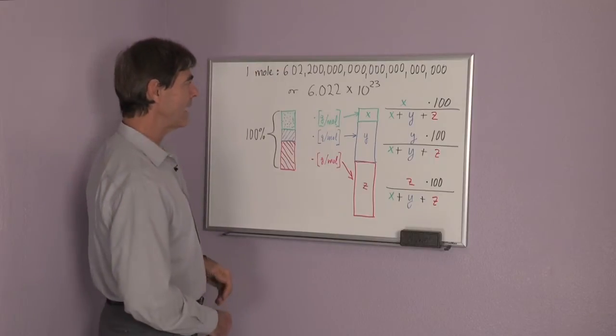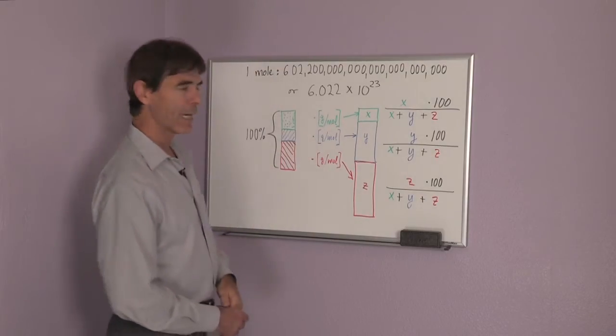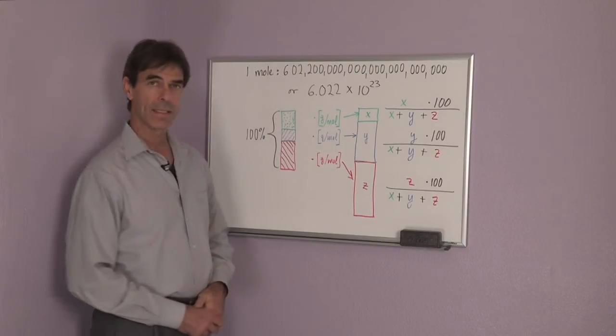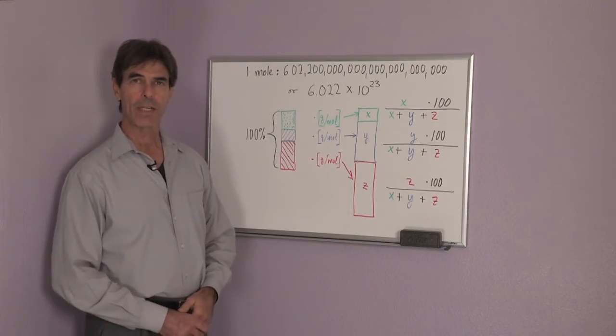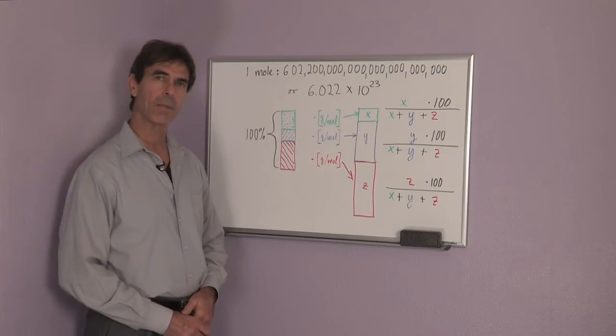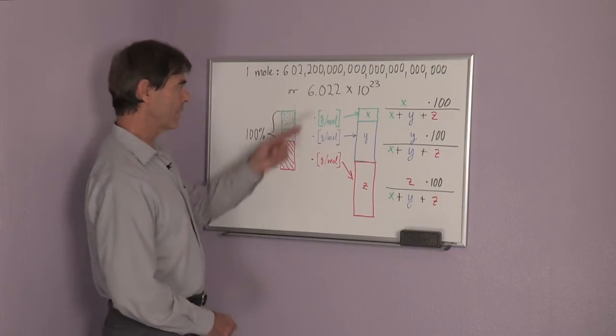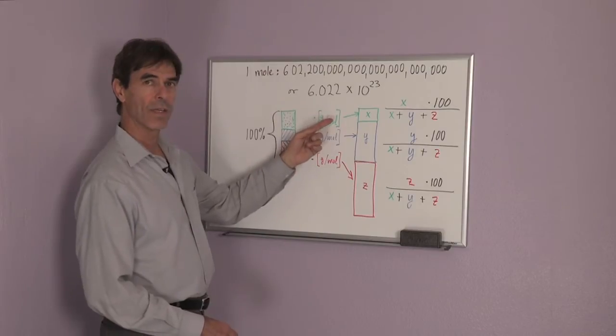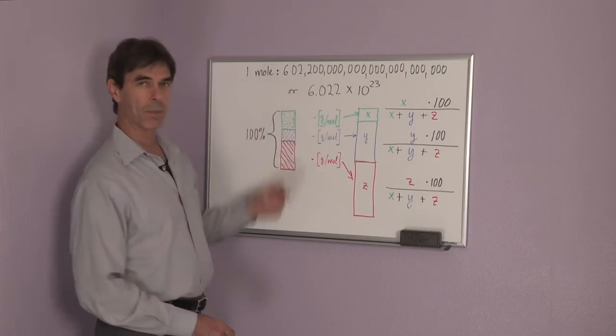I need to know how many grams per mole substance green has. If it's an atom, I would look it up in a periodic table. For instance, if it were carbon, that number would be 12; if it were oxygen, that number would be 16.